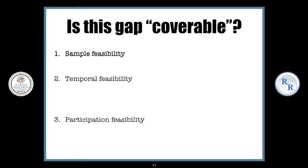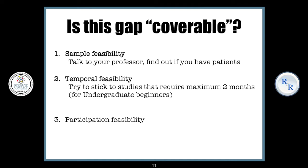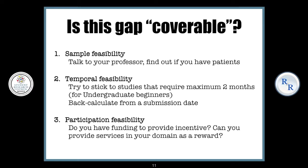To answer these questions: for sample feasibility, you can talk to your professor and find out if you have those patients. For temporal feasibility, I usually suggest sticking to studies that require a maximum of two months, especially for undergraduate students who are beginners in research. You can also back-calculate from a submission date — for example, ICMR has a submission date in January, so maybe you should start by August. For participation feasibility, do you have funding to provide incentive to participants? Or more feasibly, can you provide services in your domain — for example, you can provide a health camp and during that health camp, you can find things out.